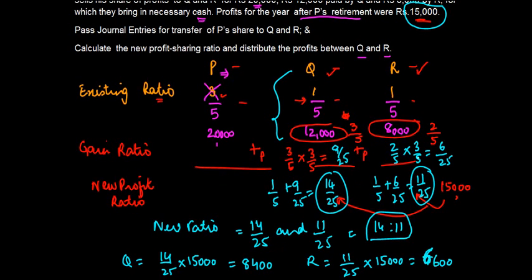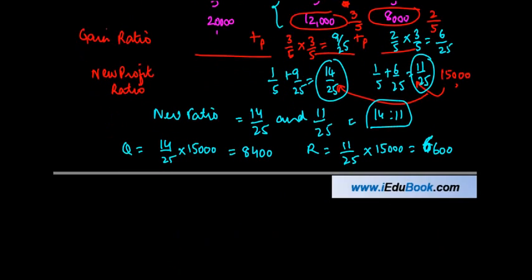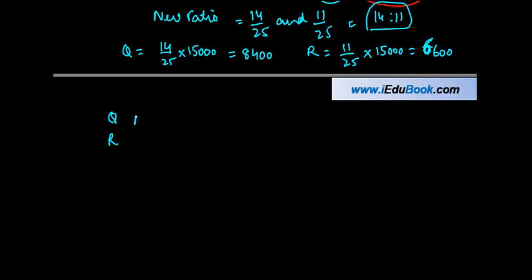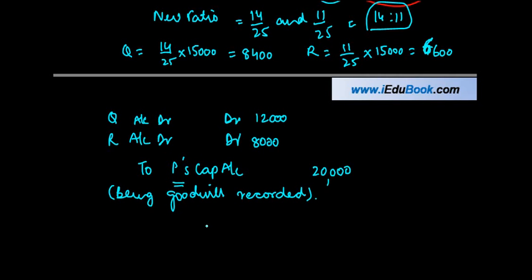Now we can pass the journal entries. The first entry: debit Q's capital account and R's capital account, credit P's capital account — by twelve thousand and eight thousand respectively, totaling twenty thousand. This is for goodwill being recorded. The total goodwill created is twenty thousand, out of which Q pays twelve thousand and R pays eight thousand, so they are debited in the respective ratio.